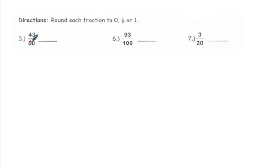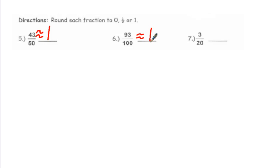43 out of 50 gives you almost the whole thing, so we would say it's about 1. 93 out of 100 is about 1. But 3 out of 20 — half of 20 would be 10 — so this would be closer to 0.